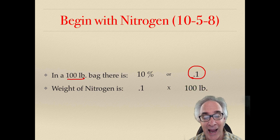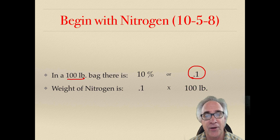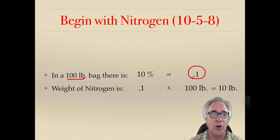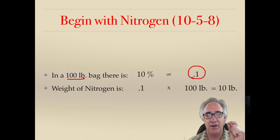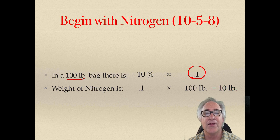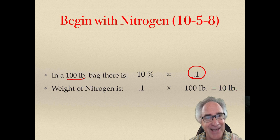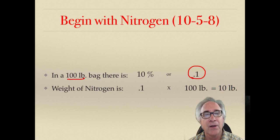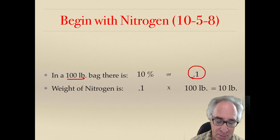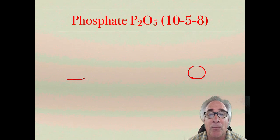.1 times 100 is going to equal 10 pounds. So in a 100-pound bag, if it's 10-5-8, that means 10% of that 100 pounds is going to be nitrogen. So it would weigh .1 times 100, which equals 10. So far, the math is pretty simple. It doesn't get much harder.